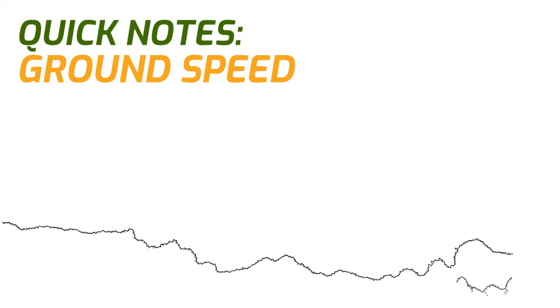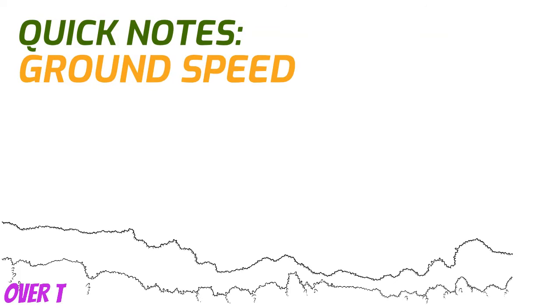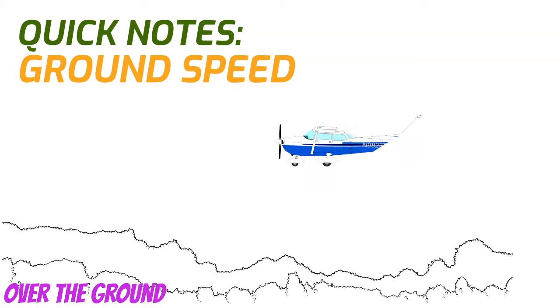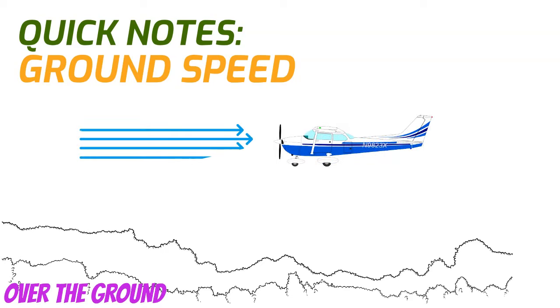The next type is ground speed. This is simply how fast your airplane is flying over the ground. For example, if you have a headwind, you're traveling over the ground slower than your airspeed indicator tells you that you are.